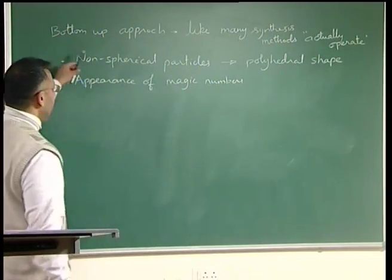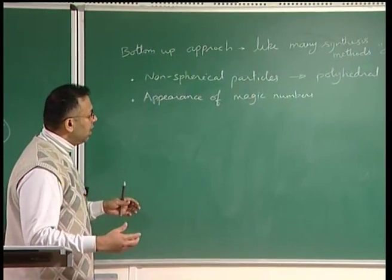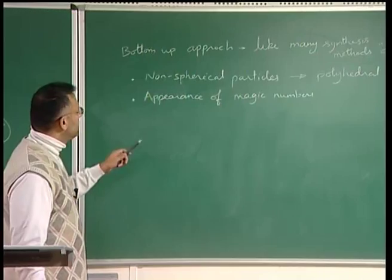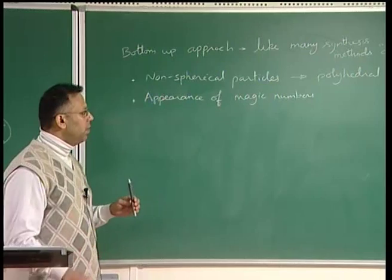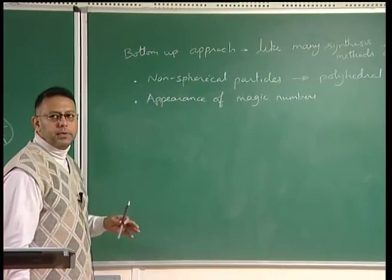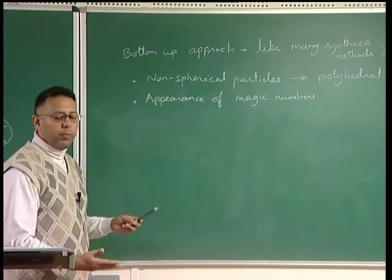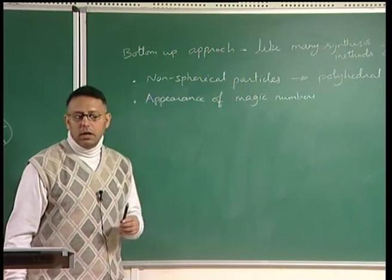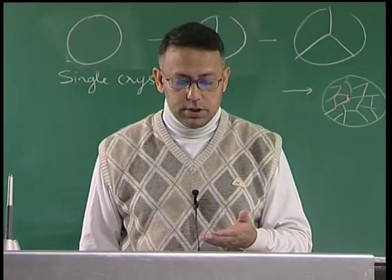In the bottom-up approach, as many synthetic methods actually work, we do not start with the bulk crystal but construct the nanocrystal starting from a few atoms or a few molecules. The particles may be non-spherical — in fact they could be polyhedral. If surface diffusion effects are dominant, nanoparticles can easily assume a polyhedral shape. Additionally there are magic numbers which may be stabilized by electronic configuration, but here we will see that purely geometric reasons can cause such magic numbers to appear.